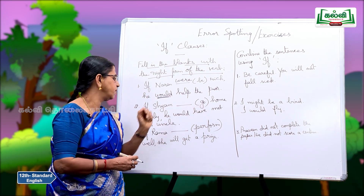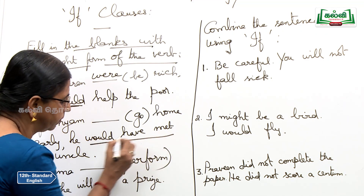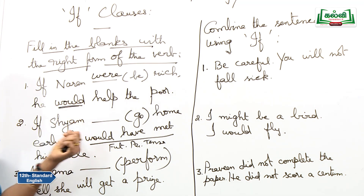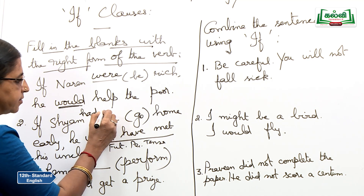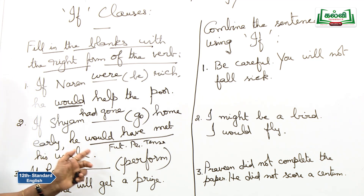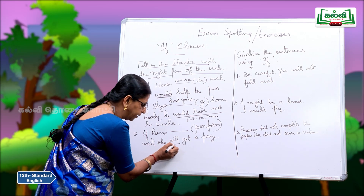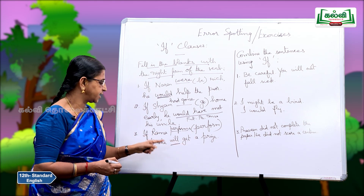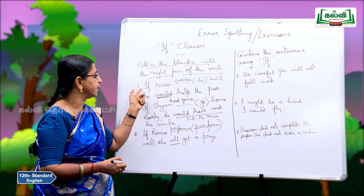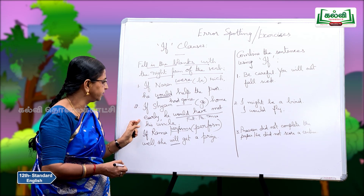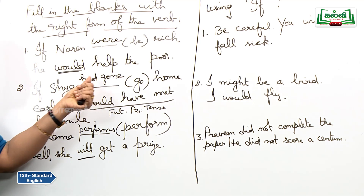If Shyam had gone home early, he would have met his uncle. Look at the main clause — 'would have met' is future perfect, so you must have the past perfect tense in the if clause. If Rama performs well, she will get a prize — here you have 'will,' so you use the present form. First type: will and present tense in the if clause. Second type: would and past tense in the if clause. Third type: would have and past perfect in the if clause.